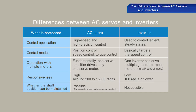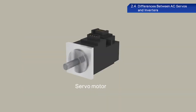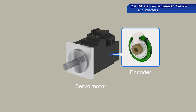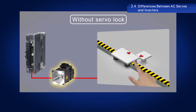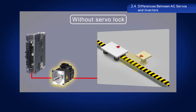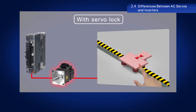The most important difference is that AC servos have a servo lock, whereas inverters do not have any locking mechanism. This functionality is enabled by the encoder included in the servo motor configuration. Servo lock refers to the state in which the servo motor maintains control of an object so as to keep the object in the desired position. Without servo lock, external force applied to an object can move the object out of position. With servo lock, the servo motor can move an object that has been moved out of position back into position.